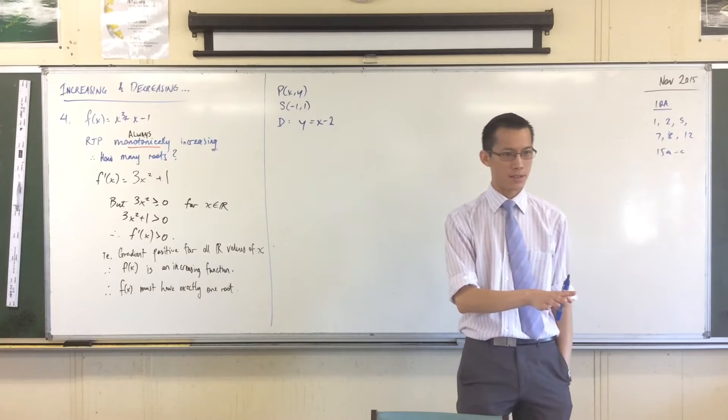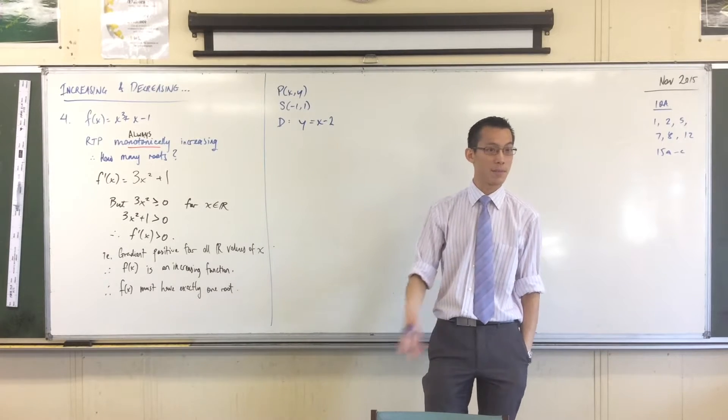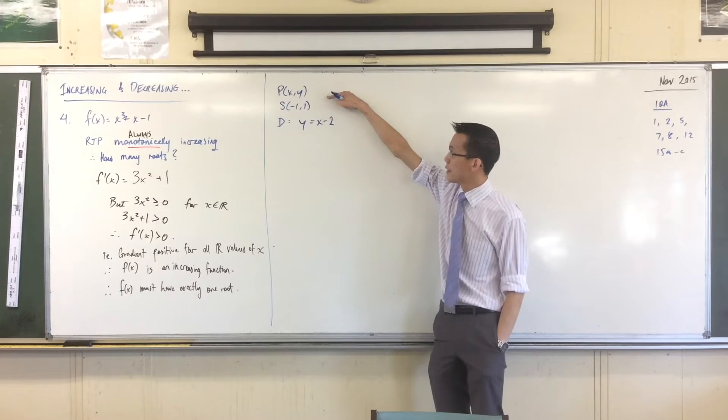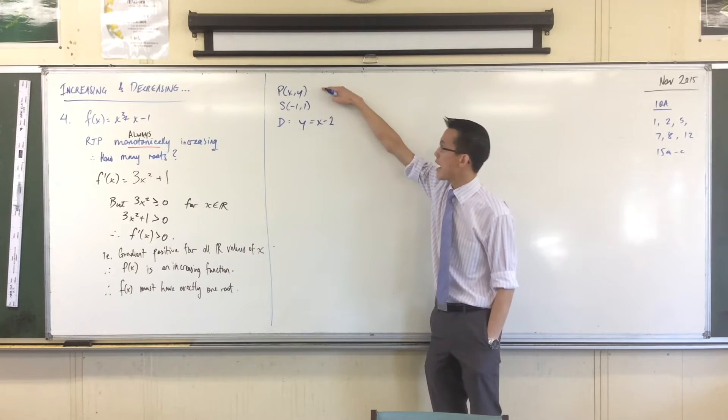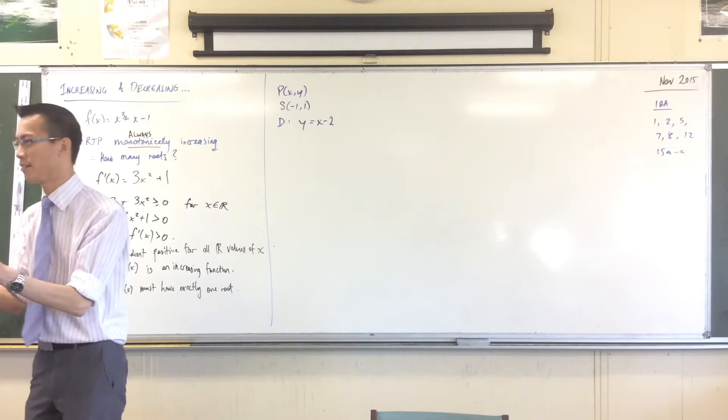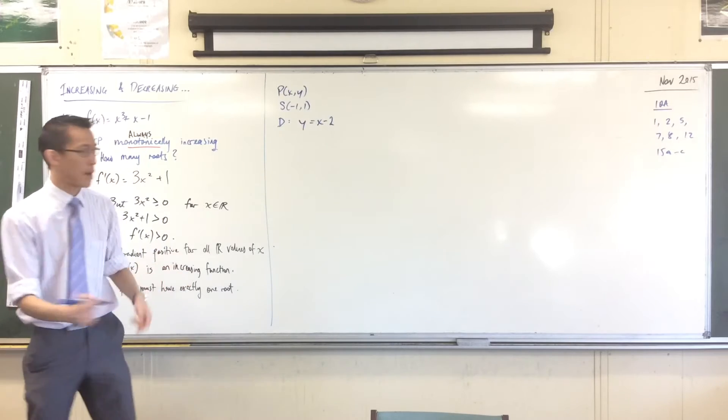Here's the way we're going to think about this. They ask us to do something else in a minute, but we have to get the locus first. This is my variable point. I'm going to be the same distance to this point as I am to this line. I'm going to start off just by stating geometrically what the definition of a parabola is.